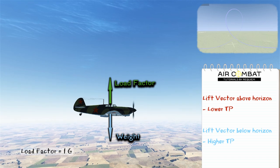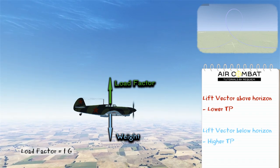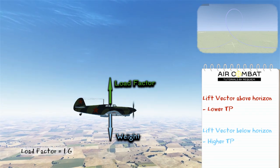So from all this, we learn that if the lift vector is above the horizon, we're going to have lower turn performance, and if the lift vector is below the horizon, we're going to have higher turn performance.